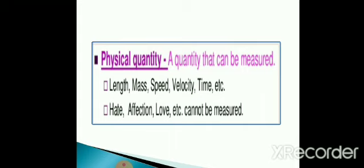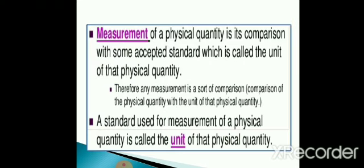Physical quantity is a quantity that can be measured. For example, length, mass, speed, velocity, time, etc. Quantities like hate, affection, love, etc. cannot be measured, so these are not examples of physical quantities.